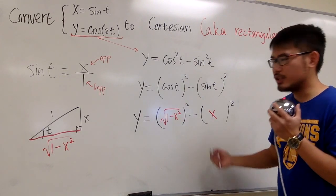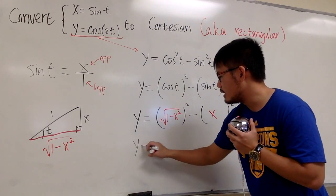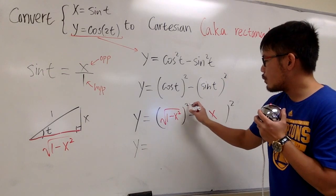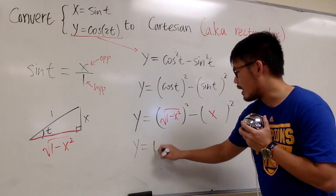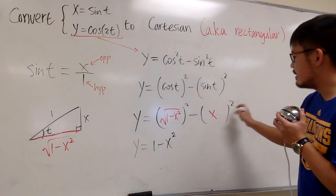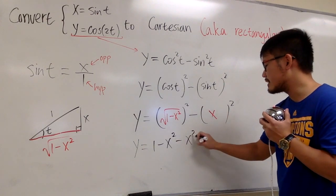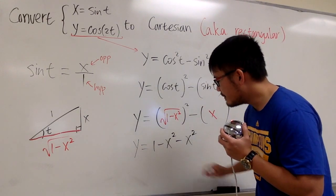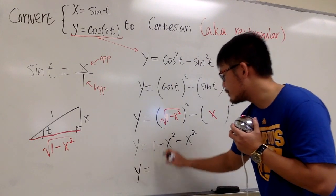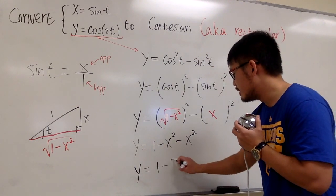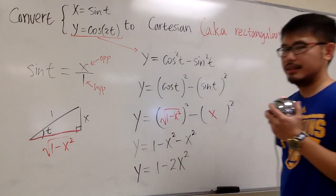Of course, we can simplify this a little bit, so we can say this is y equals to the square and the square root cancel. So we have 1 minus x squared, and then minus another x squared. All in all, we have y equals to 1 minus 2x squared.